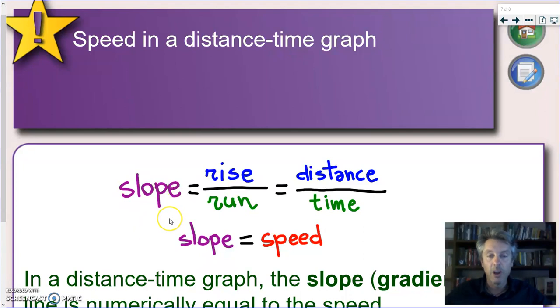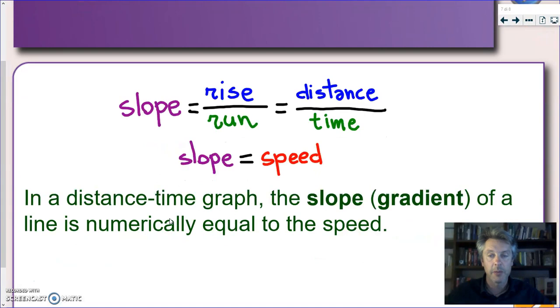And this is a very important finding here. That the slope is equal to the speed. So, we can summarize this finding with a statement. In a distance-time graph, the slope, also known as the gradient of a line, is numerically equal to the speed.